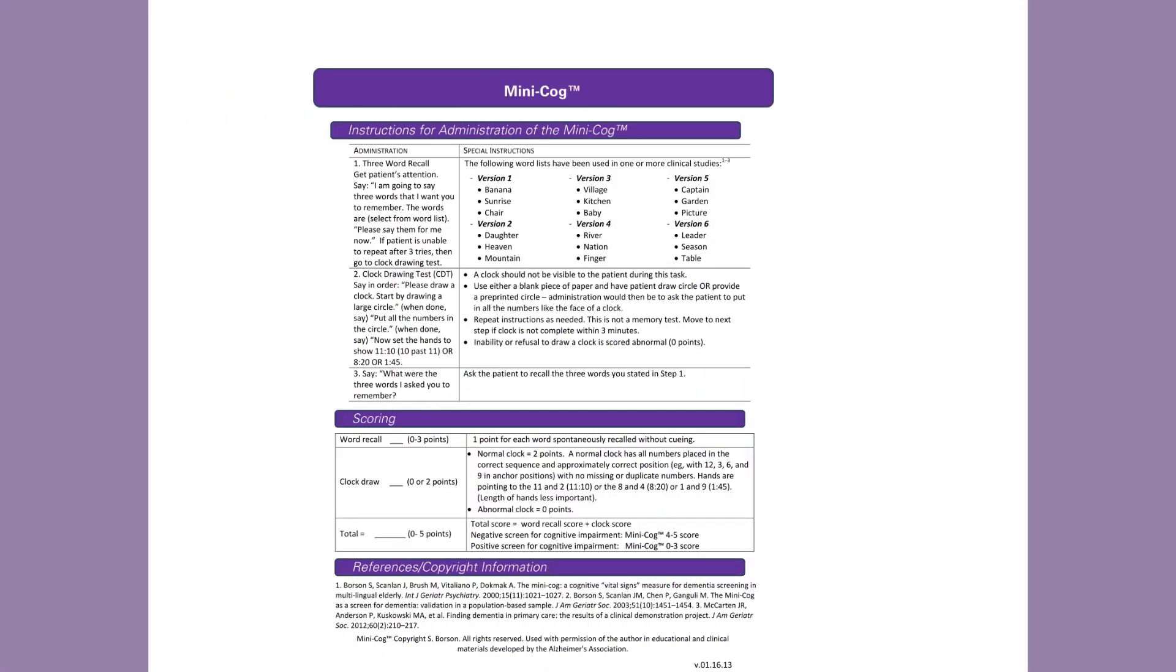This screen shows an alternative format of the same up-to-date version of the Mini-Cog with instructions and scoring procedures, just like in the previous example. On this form, in the upper right-hand corner, you will see that six alternative word lists are provided for use with the instrument. This is particularly helpful for serial or longitudinal administrations of the Mini-Cog over time with the same patient.